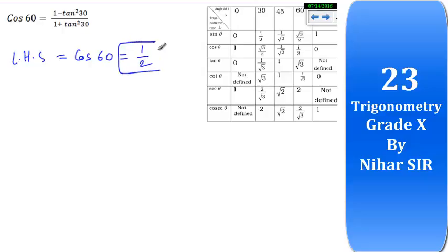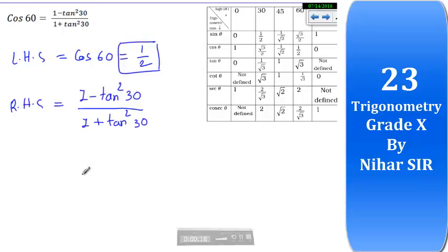Right, so this is my LHS. Now let's go for RHS. My RHS is this, so now let's substitute the value 1 minus tan 30. Let's see the value of tan 30, that is 1 upon root 3, so 1 upon root 3 square.